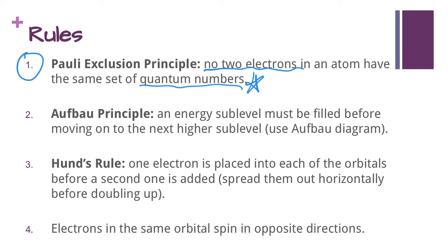The Aufbau principle says that an energy sublevel must be filled before moving on to the next higher sublevel. Hund's rule says that one electron is placed into each of the orbitals before a second one is added, so we're going to spread them out before doubling them up. Finally, electrons in the same orbital spin in opposite directions, and we'll show that by using an up arrow or a down arrow.